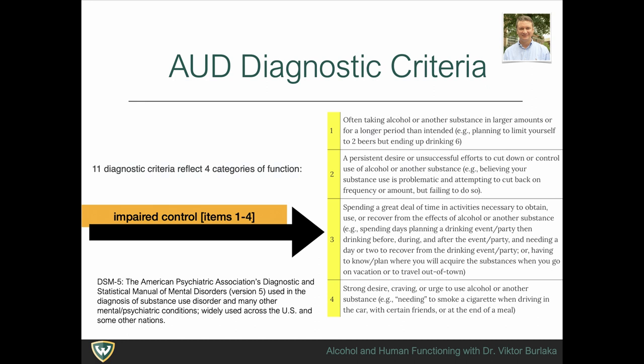The first function is impaired control over use, which includes four criteria: (1) inability to control the amount and length of use; (2) persistent desire and inability to cut down or control the pattern of use; (3) spending a lot of time trying to get the substance, use it, and recover from its use; and (4) a strong desire, craving, or urge to use.